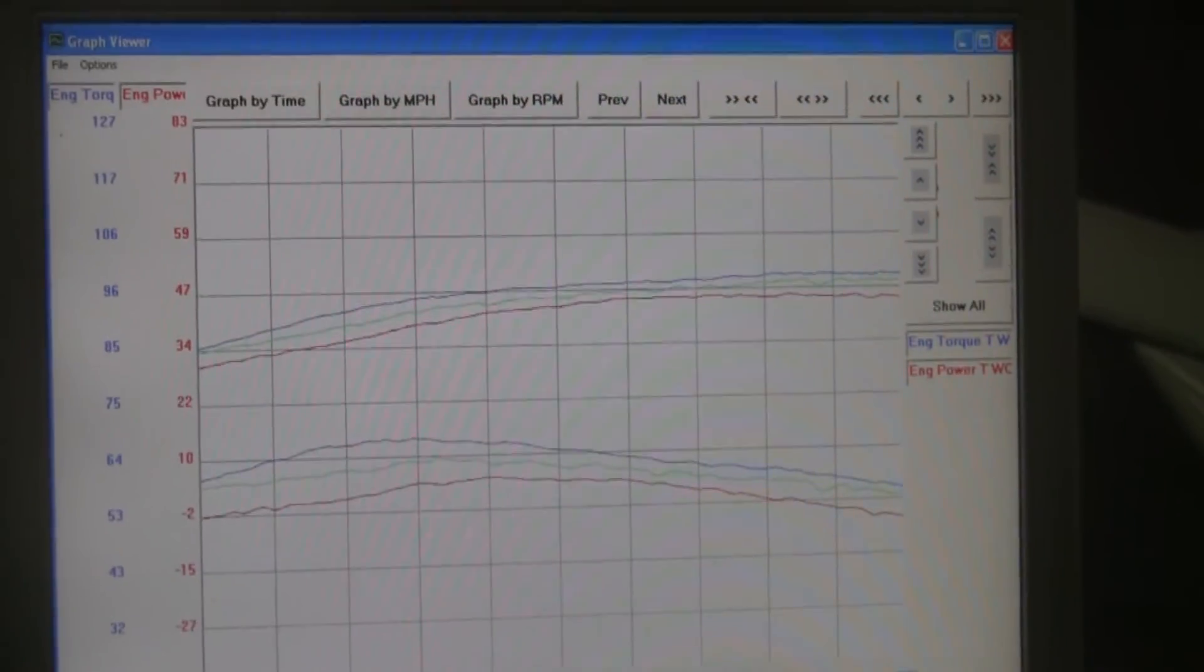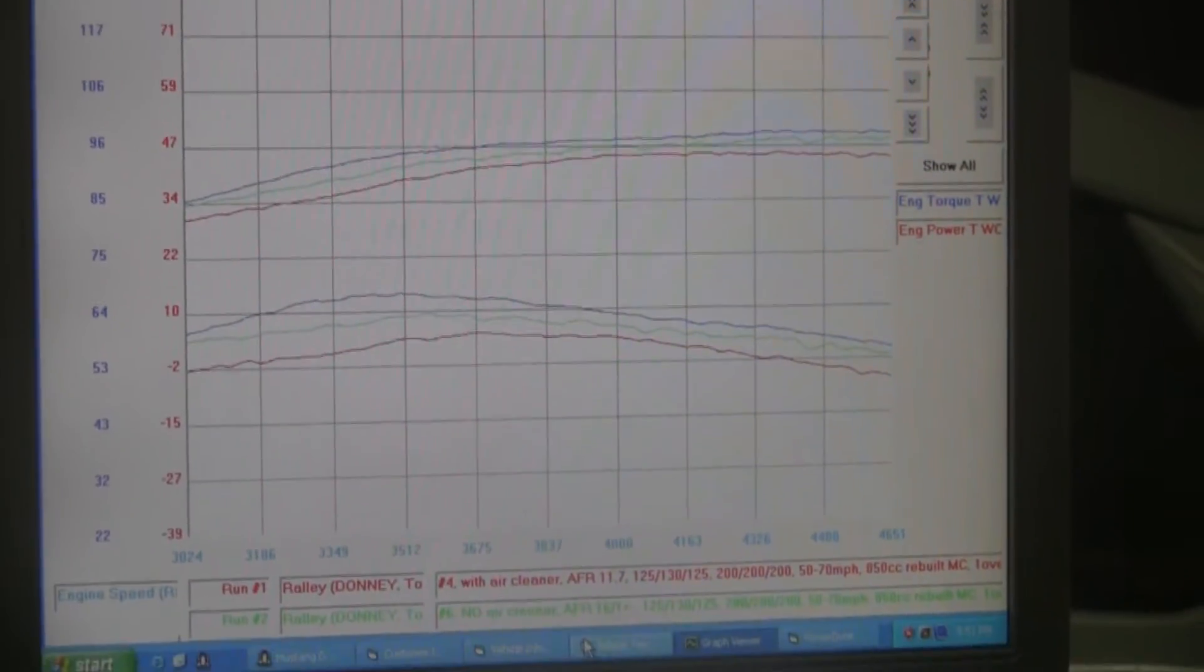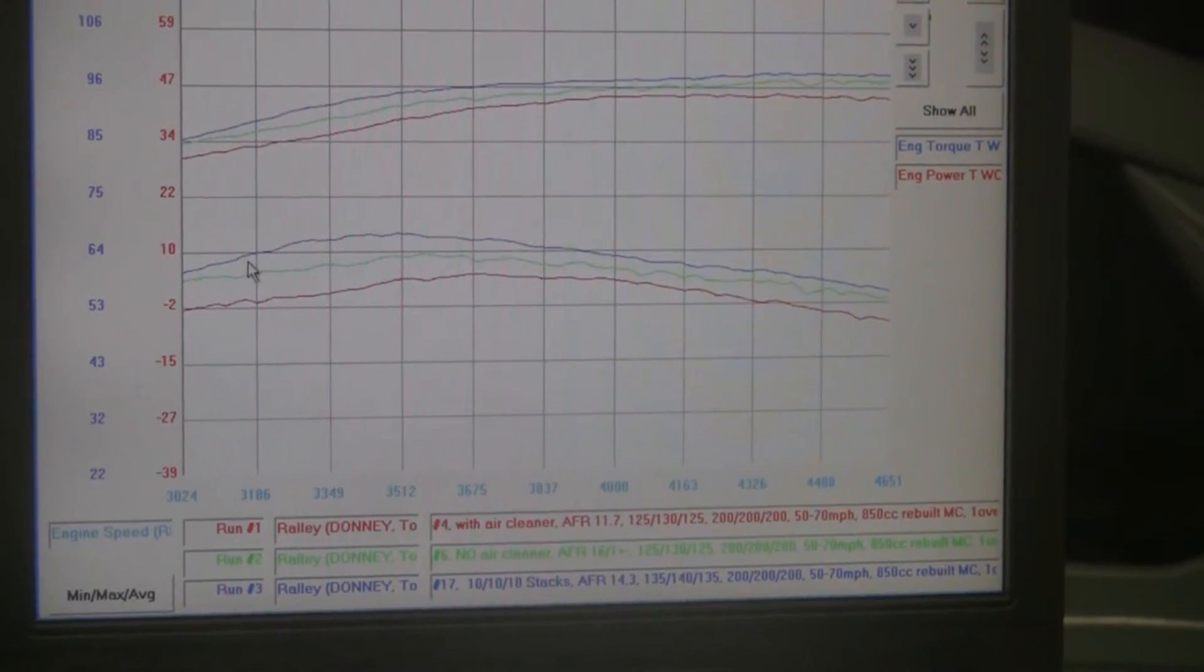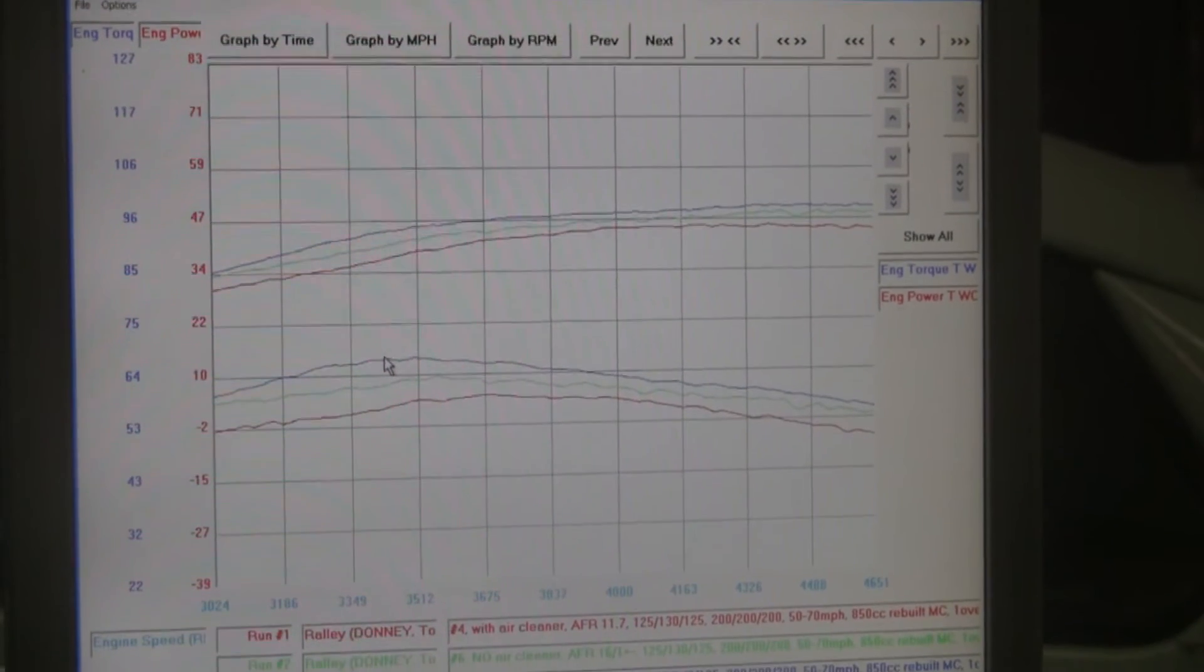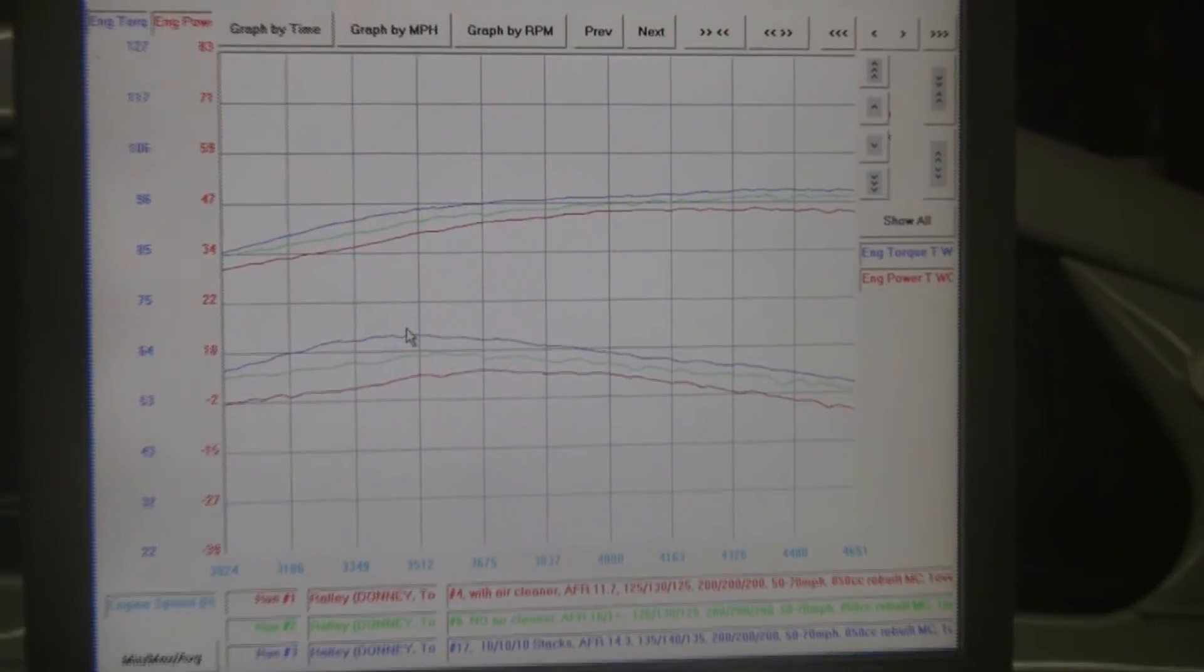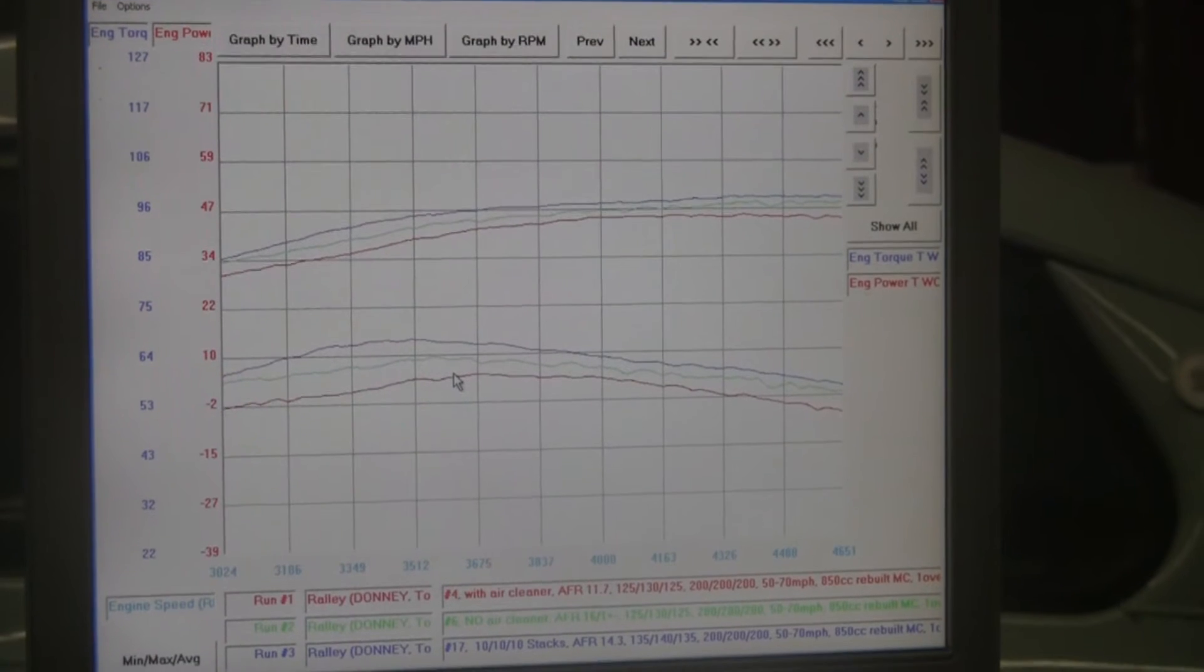And then of course, the blue line is our bottom line here on the computer, the top here on the chart, that's with our new velocity stacks. The velocity stack is designed to make air more efficient coming into the carburetor.